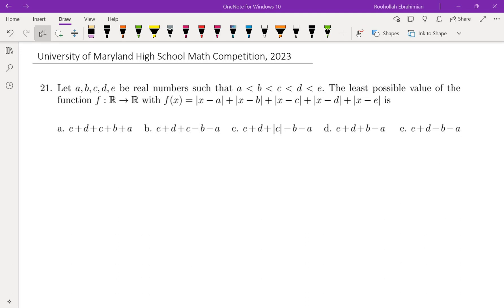Let A, B, C, D, E be real numbers with A less than B less than C less than D less than E. The least possible value of the function f from R to R with f of x equals absolute value of x minus A, absolute value of x minus B, absolute value of x minus C,